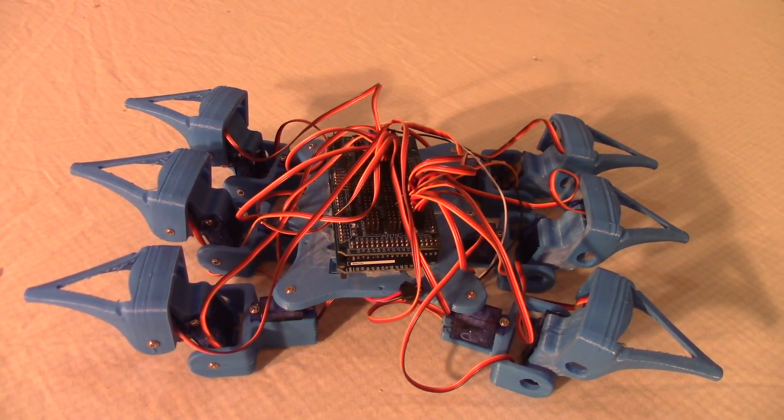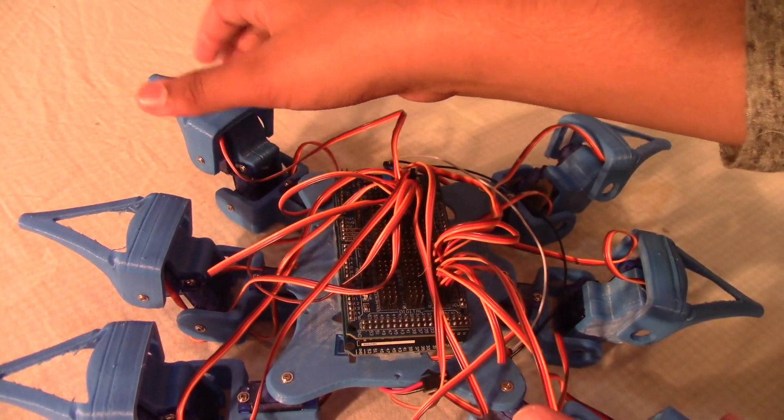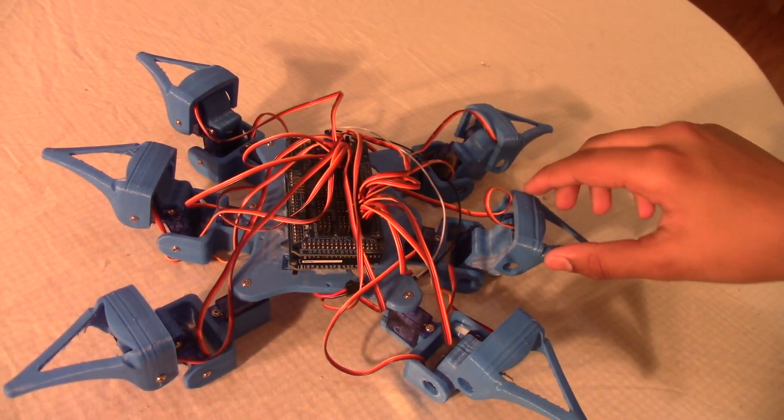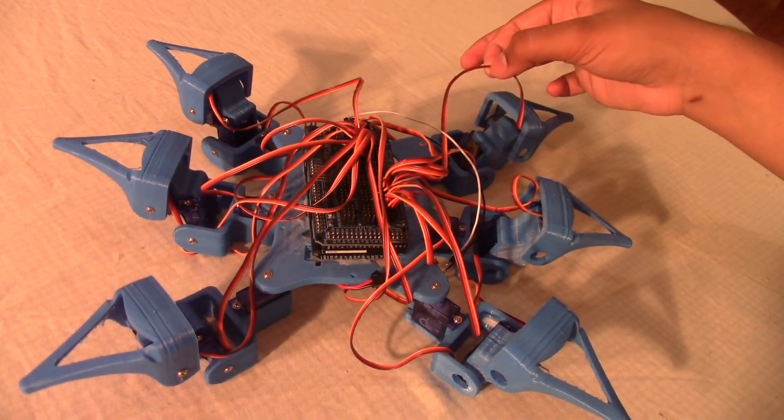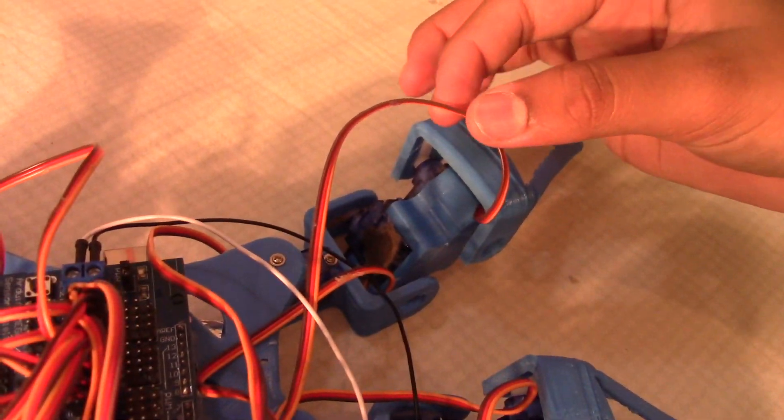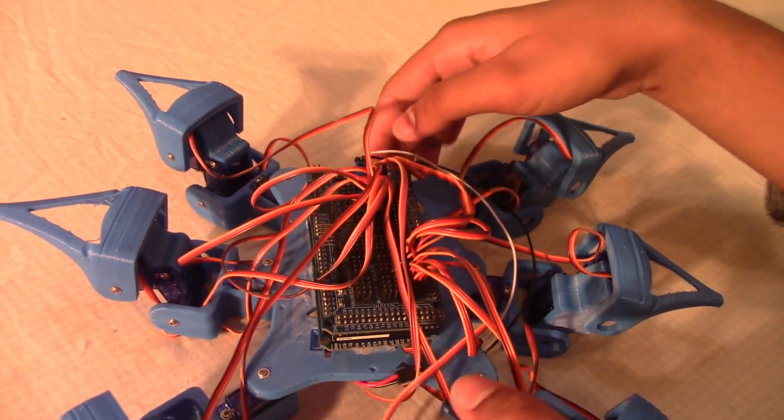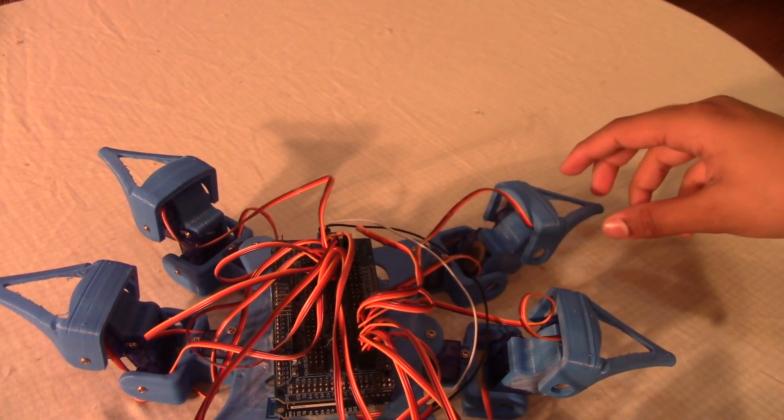So that was a time lapse of connecting all the wires. I'll explain to you what I did with the wires. Here we can think of it as leg 1, 2, 3, 4, 5, and 6. The legs go 1, 2, 3, 4, 5, 6. This wire is servo number 1. Servo number 1 is connected onto digital pin number 14. This bottom foot part is the first servo in all of the legs.